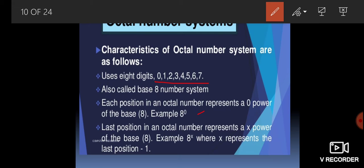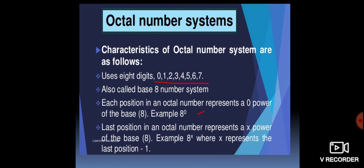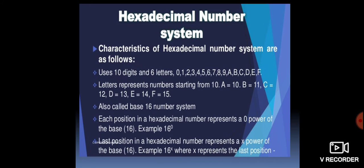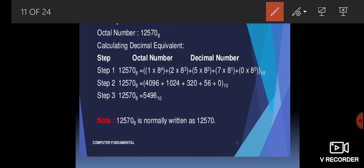The last position will be n minus 1, meaning 8 raised to the power x where x equals n minus 1 — one digit less, same as before. Now we want to convert an octal number to a decimal number. The number is 12570. The digits in an octal number range from 0 to 7. Notice there is no 9 and no 8 in this number, confirming it is a valid octal number with base 8.